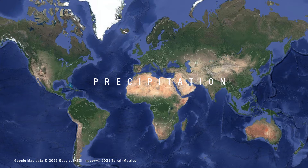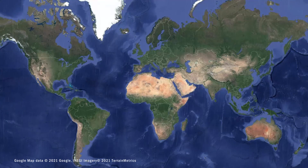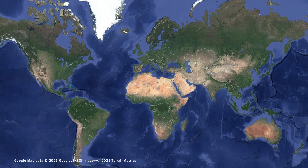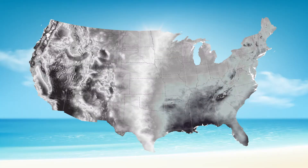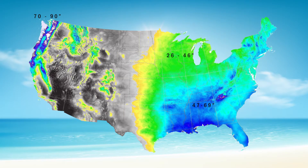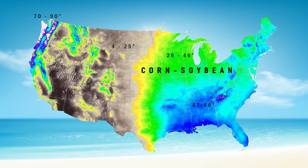Precipitation, especially rain, has a dramatic effect on agriculture, because all plants need at least some water to survive. Therefore rain is essential to agriculture. The eastern US, with an annual average precipitation of 40 inches, has been dominant in corn and soybean production, while the western, drier half is known as the wheat belt for its high rate of wheat production.